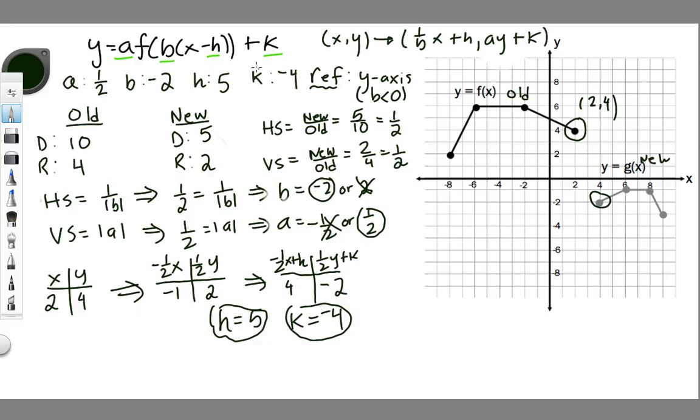So now that I have all these things, all I got to do is fill in this equation. Y is equal to, so A is one half, one half, f of, B is negative two, negative two times (X minus five), and then K is negative four, subtract four. And there is my transformed equation.